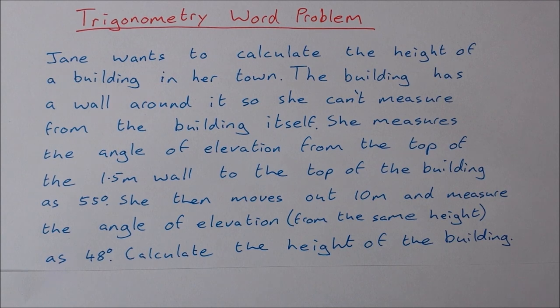So Jane wants to calculate the height of a building in her town. The building has a wall around it so she can't measure from the building itself. She measures the angle of elevation from the top of the 1.5 meter wall to the top of the building as 55 degrees.